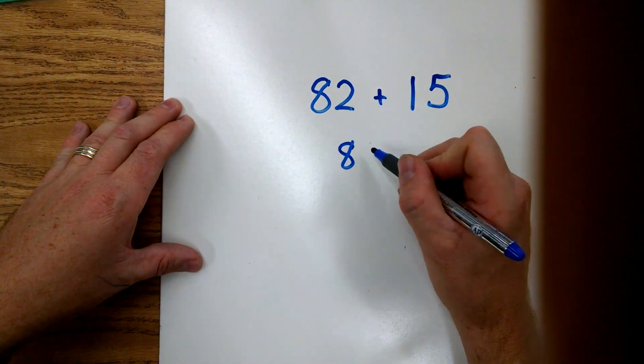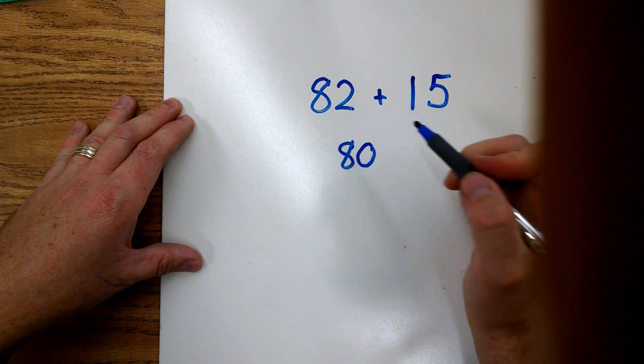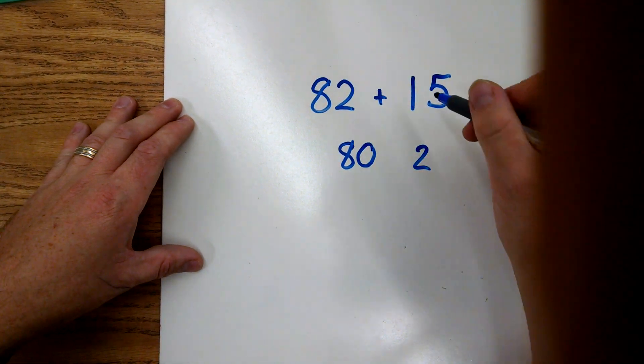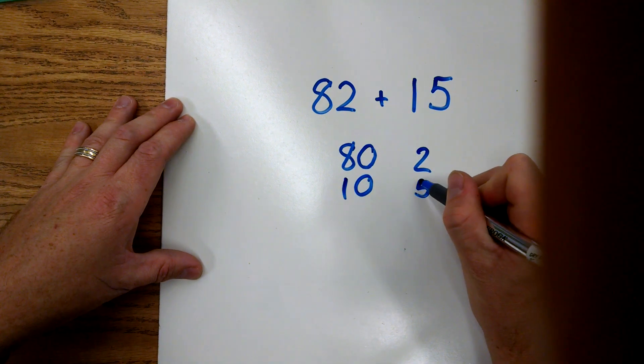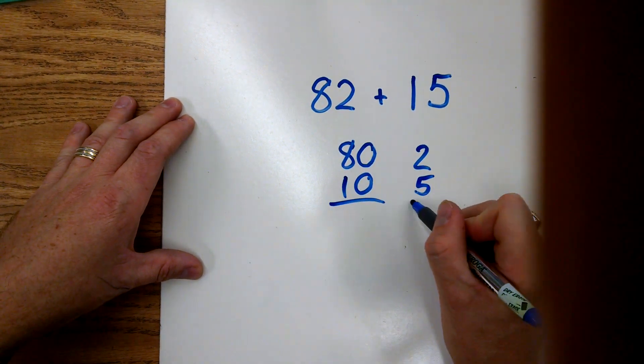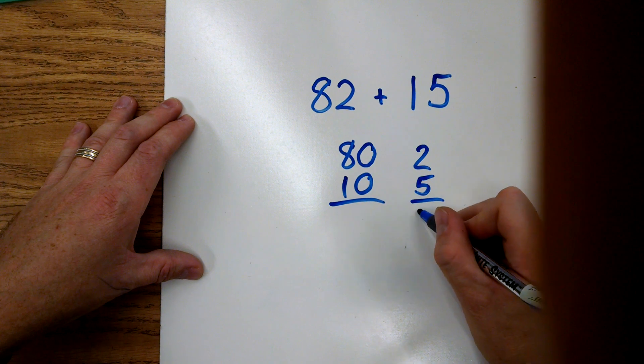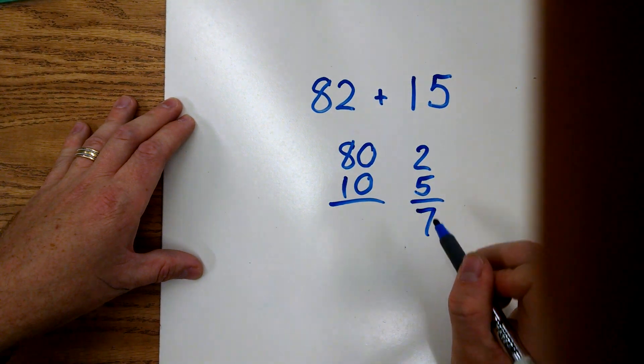So 82 has eight tens. The value of eight tens is 80, and two ones, the value of two ones is 2. We're going to break apart 15 into 10 and 5.